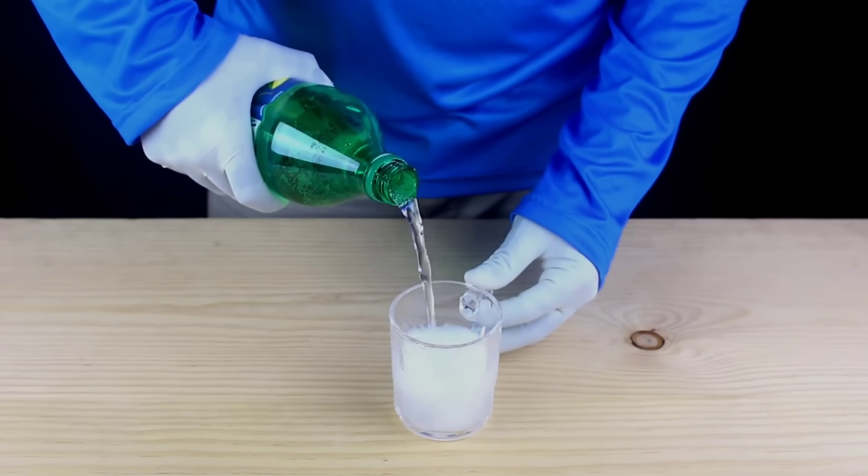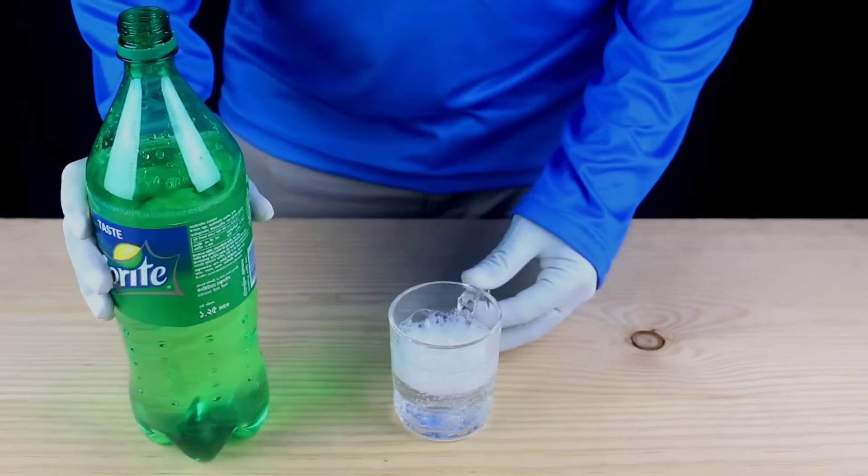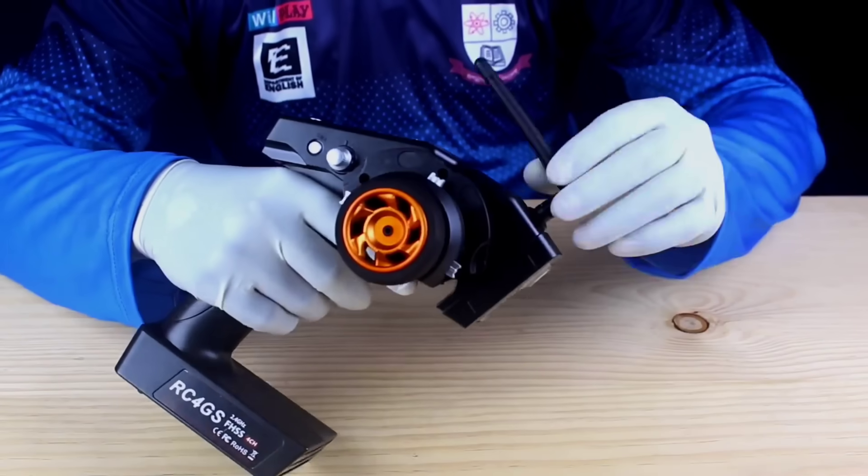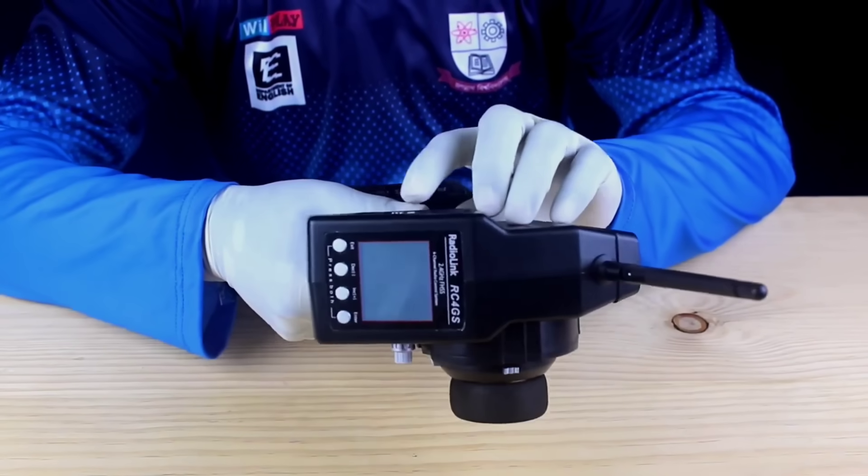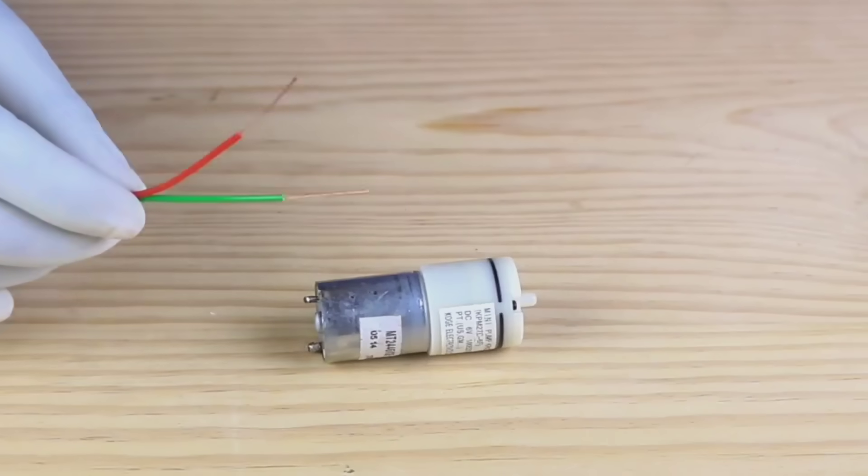I'm using a transmitter and receiver setup that allows the drink to flow with the wave of a hand or a simple signal. However, if you're looking for a more basic version of the machine, you can also construct it using a simple on-off switch to control the flow.